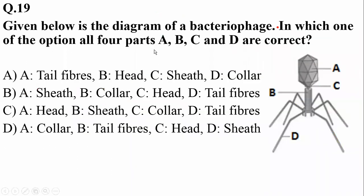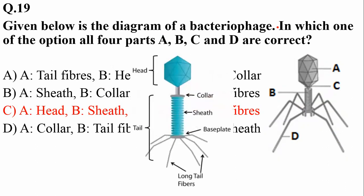Question 19 gives a diagram of a bacteriophage. In the correct option, all four parts are labeled: alpha is the capsid, charlie is the collar, beta is the sheath protein, and delta is the tail fiber. The complete structure includes the head, collar, sheath, base plate, and long tail fibers.